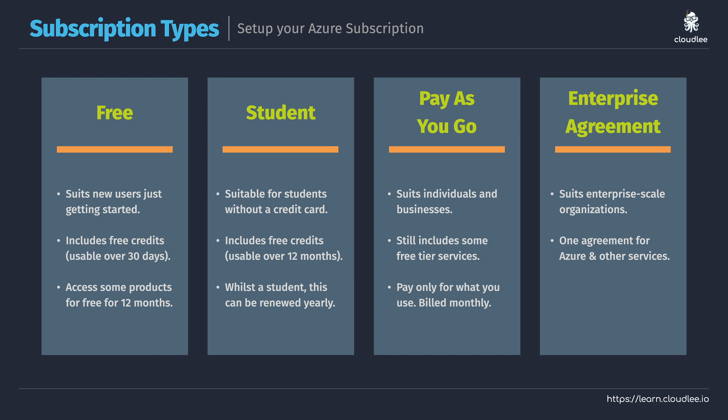How do you actually pay for an EA? Well, that really does differ depending on the agreement you set up with Microsoft. I've seen lots of different models, from monthly through to the use of credit providers that actually pay Microsoft. But typically what we're talking about with an enterprise agreement is something like a 12 to 36 month agreement with Microsoft, where you're committing to using all of these different licenses and products over a long period of time. The way in which that is billed is going to depend on your agreement. Those are some of the subscription types to be aware of.